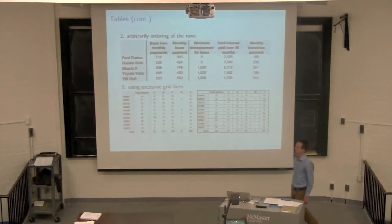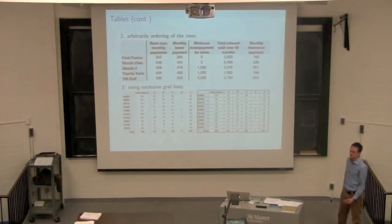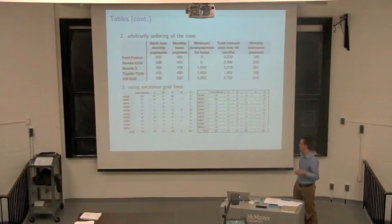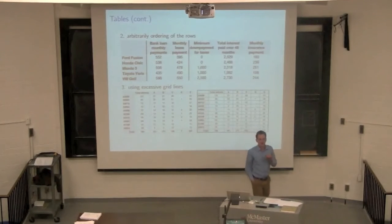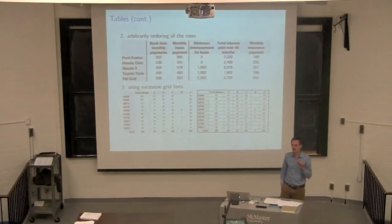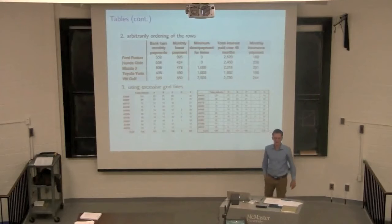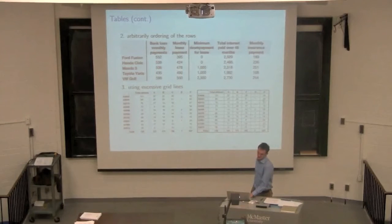Just some other things about tables: I mentioned reordering rows by a third variable. Also, regarding the use of excessive grid lines — it's interesting that the human eye is very good at picking out white space and mentally imputing vertical grid lines. Your eye just reads a separate column without needing an actual line drawn. You don't need to have an actual line; sometimes white space alone is a reasonable and clean solution.